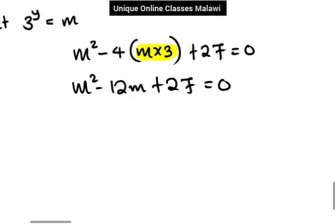We can find the value of m by using quadratic formula, by using completing square method, or we can use factorization method because this one is factorizable. So we will take time to factorize.